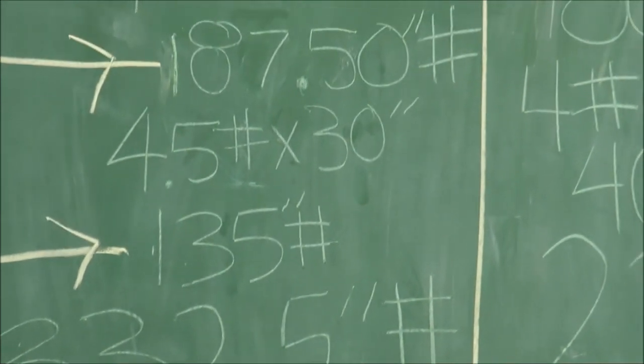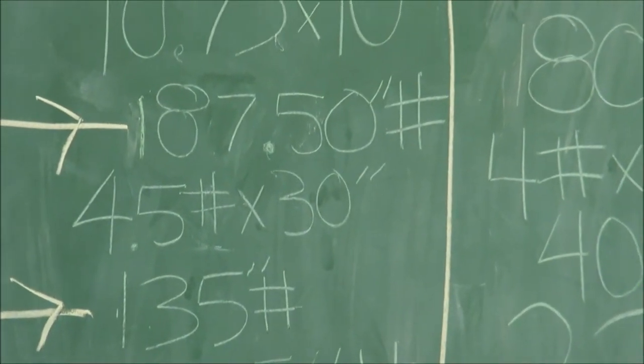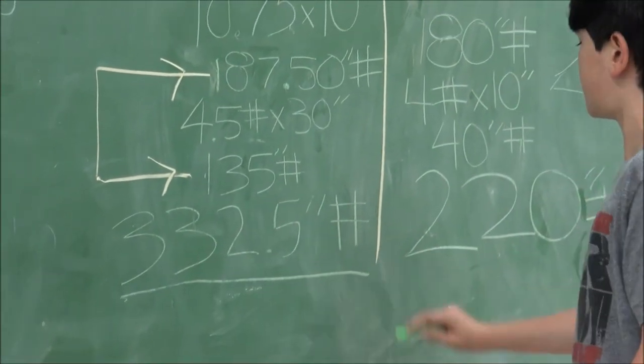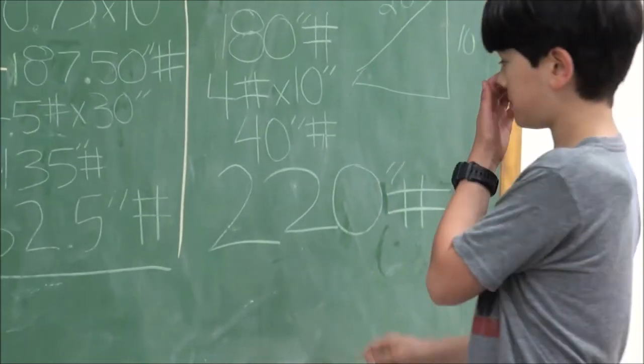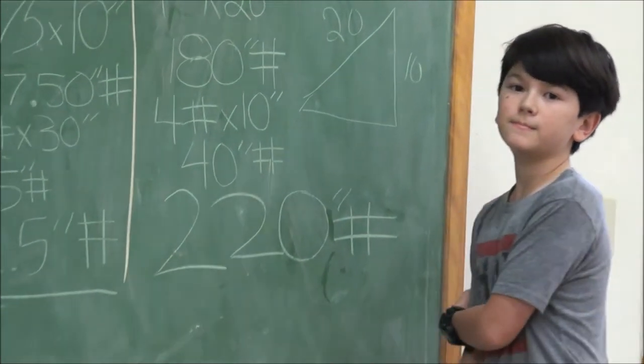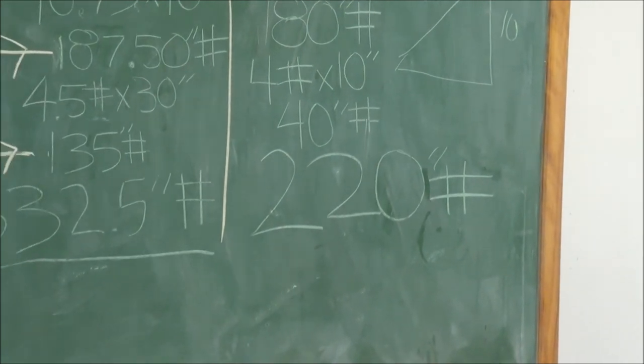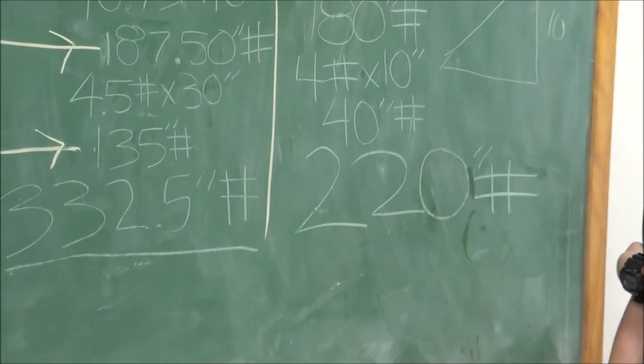We added that to the 187, which was the crane, and we got 332.5 inch pounds, which is a lot more than the 220. And it's probably enough that it fulfilled the safety factor we had. So it didn't tip over. That's why the counterweight worked.